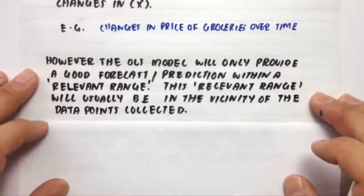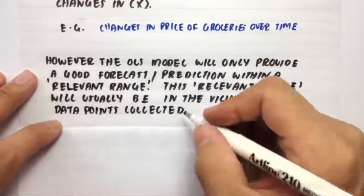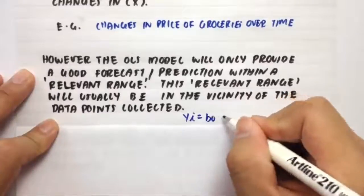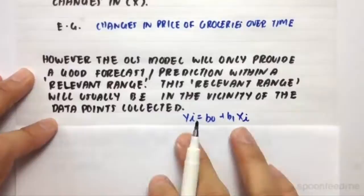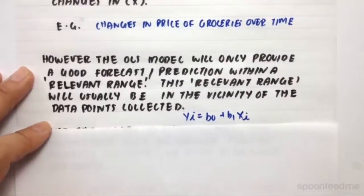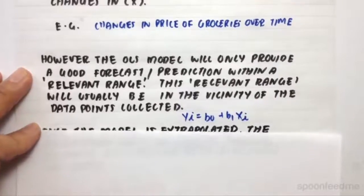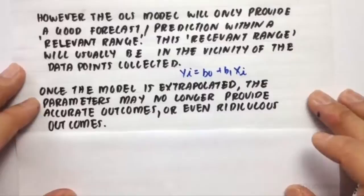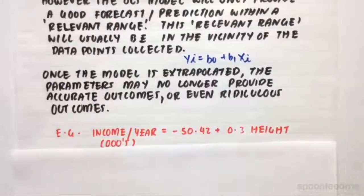For example, it wouldn't be wise to get, if you had the OLS model like something like this, so B0 plus B1X, it wouldn't be wise to extrapolate this relationship out of, so like really out of context from the actual data points used to make this OLS model. Once the model is extrapolated, the parameters may no longer provide accurate outcomes or it may even provide ridiculous amounts.